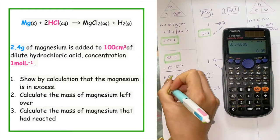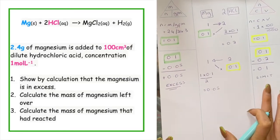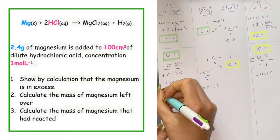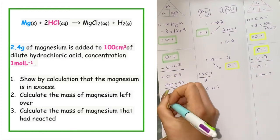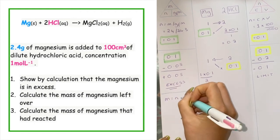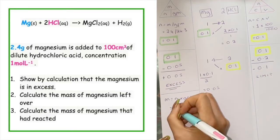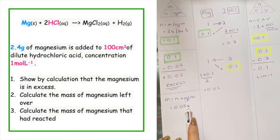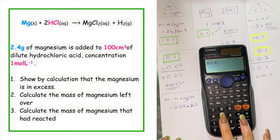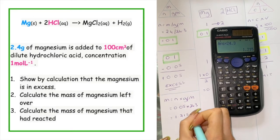As a result, magnesium is the substance in excess. So we have our excess and our limit. Another part of the question may ask what mass of magnesium would be left over. To do that, we use our mass triangle: mass equals number of moles times GFM. The number of moles left over is my excess, which was 0.05, times the GFM of 24.3. Popping that into the calculator gives a mass of 1.215 grams left over.